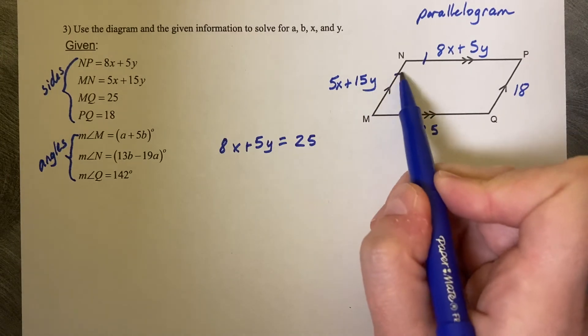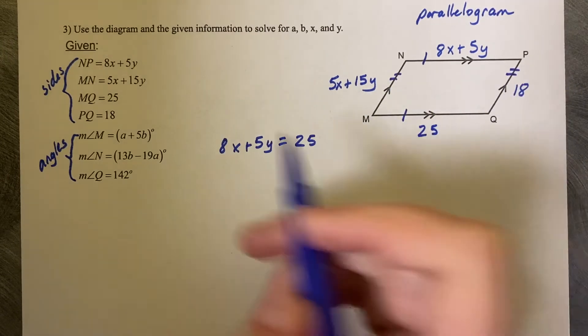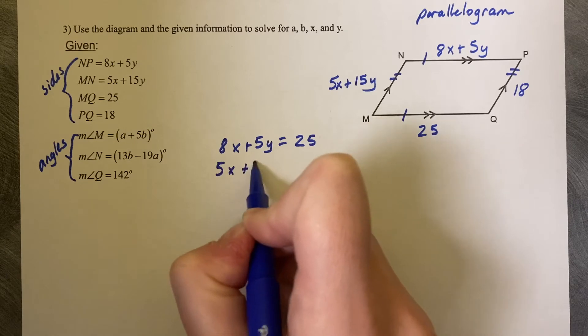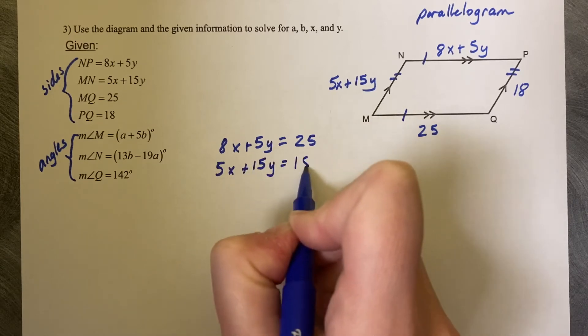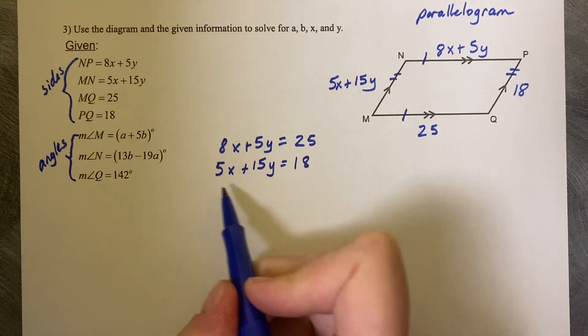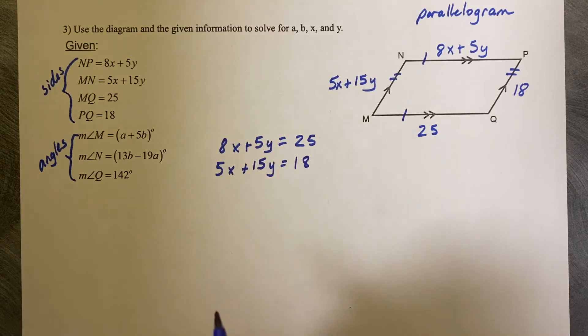So 8X plus 5Y equals 25. I also know that these two side lengths are congruent. So 5X plus 15Y equals 18. And now I've got a system of equations to solve.